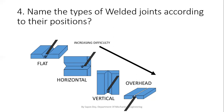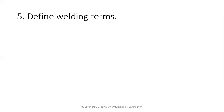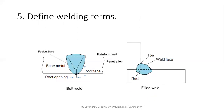Now let's discuss the next question: define the welding terms. This is also a very important question. I want to show you a picture. On the left-hand side of this picture, some terms are written. This is a butt joint, and this is the portion where the welding takes place.